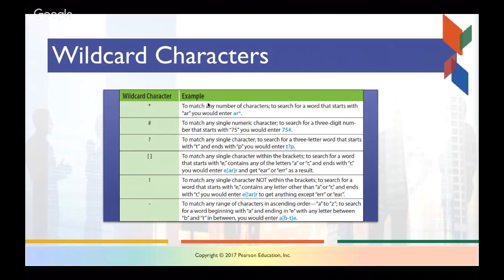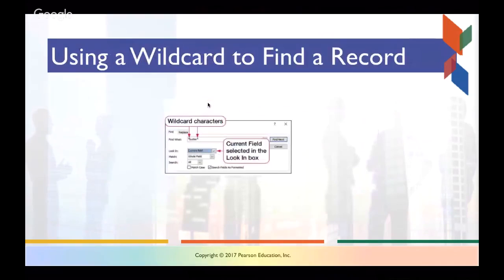You can use the unary not symbol as a wildcard to match any single character not within brackets, and you can use the dash symbol to match any range of characters in ascending order. For example, to search for a word beginning with A and ending with E with any letter between B and T, you could enter A, then [B-T], then E. We'll be using these wildcard characters in our exercises, and you may find them useful in your projects. More importantly, you can use them as filtering criteria in queries.